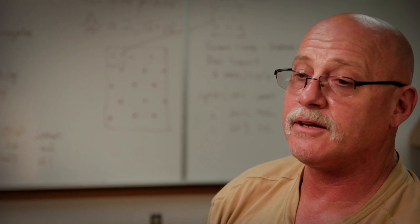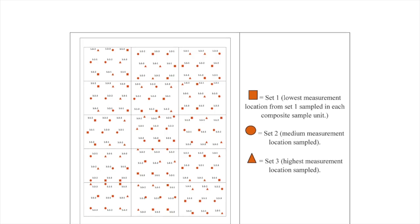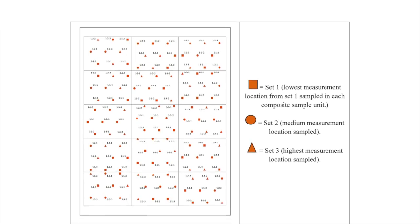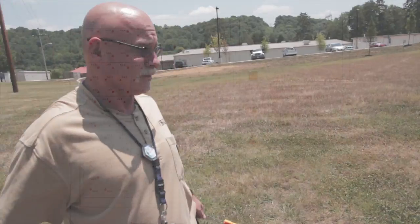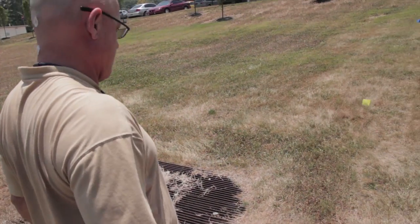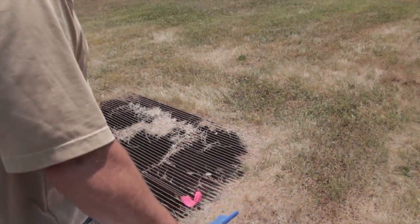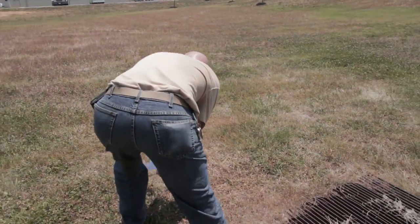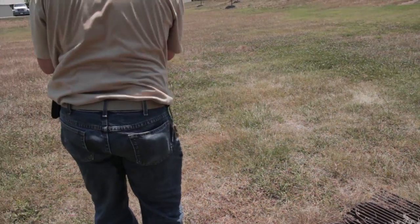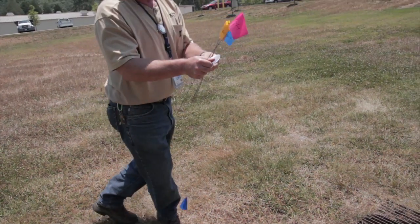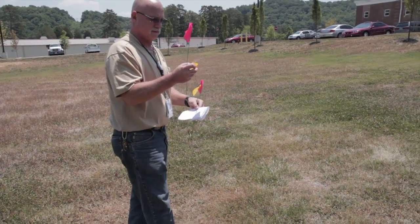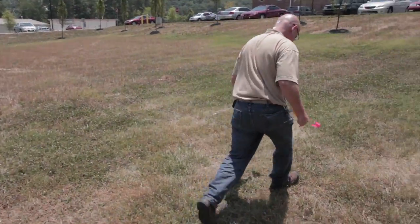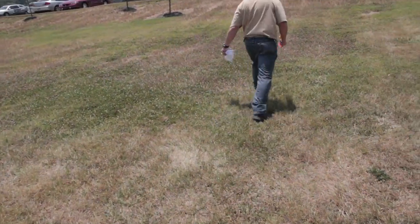In the end, we'll have a total of 45 samples rather than 115. Once we have this plan ready, we'll go ahead and lay out our RSS locations within each of the 15 subunits. Each subunit will get nine locations. We'll go mark those out in the field, collect our samples, do the ranking, and then submit those samples to the laboratory.